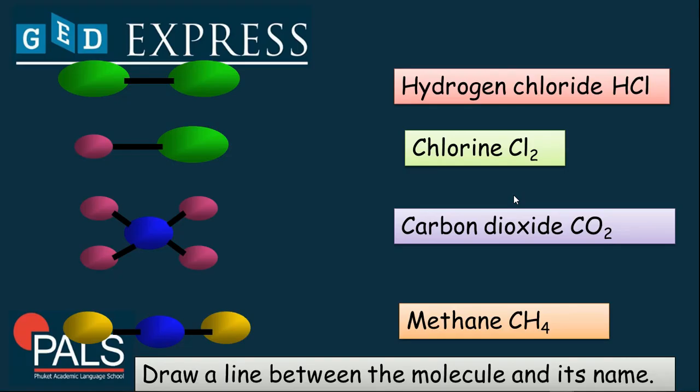How about you draw a line between the molecules and its name. Which among these molecules on your left can match the one that you have on your right? Chlorine or CO2 is this one. Great.